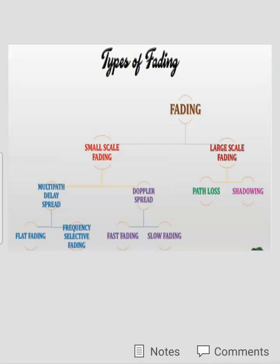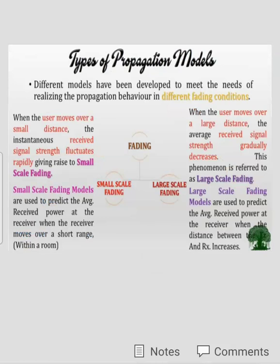Small scale fading is divided into two parts: multipath delay spread and Doppler spread. Depending on these two types of fading — small scale and large scale — propagation models are also designed. Propagation models in wireless communication depend on the type of fading effect. When a user moves over a small distance, the instantaneous received signal strength fluctuates rapidly, giving rise to small scale fading. When the user moves over a large distance, the average received signal strength gradually decreases — this phenomenon is referred to as large scale fading.